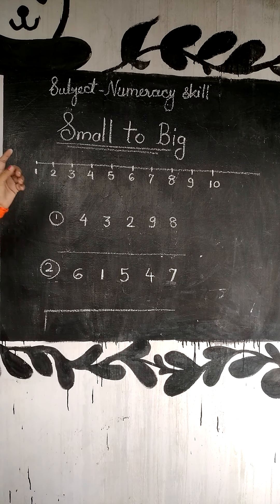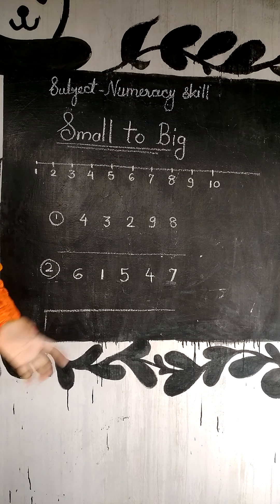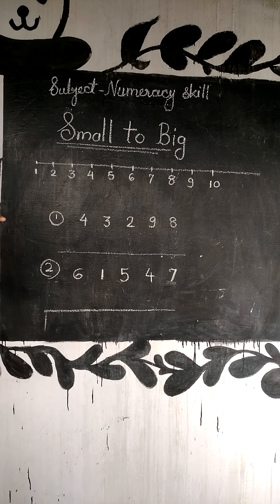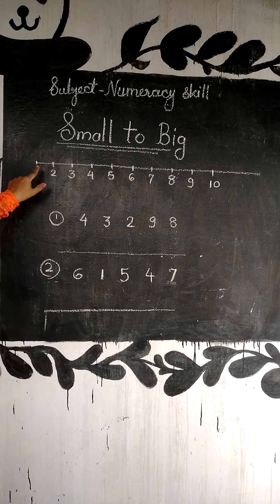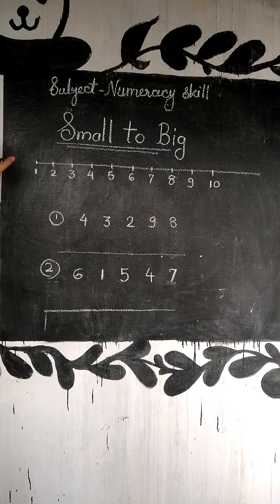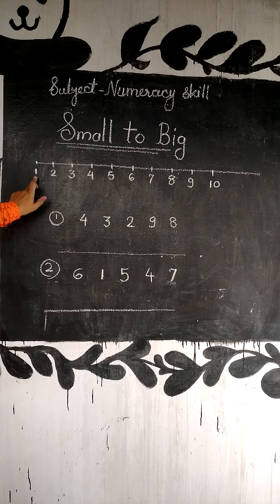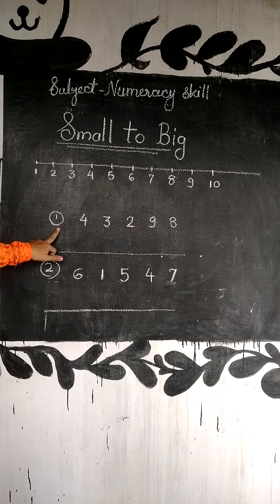So dear students, first we will arrange single digit numbers small to big. For this we use the number scale. Single digit numbers we will arrange using the number scale.